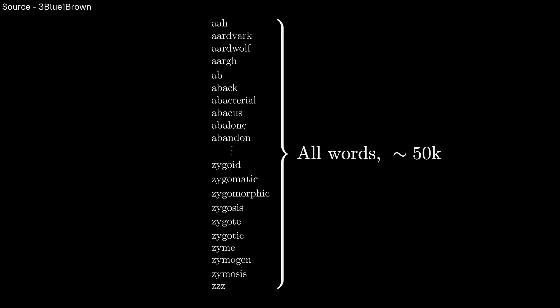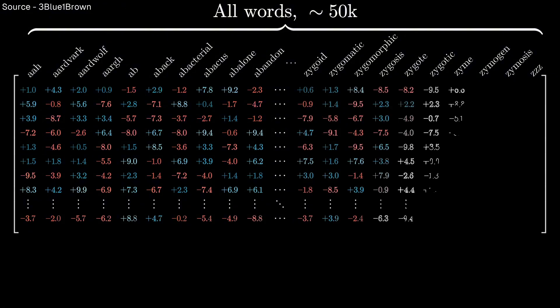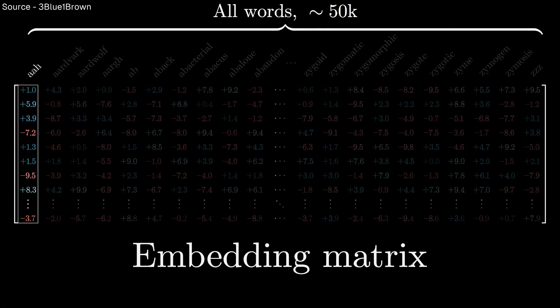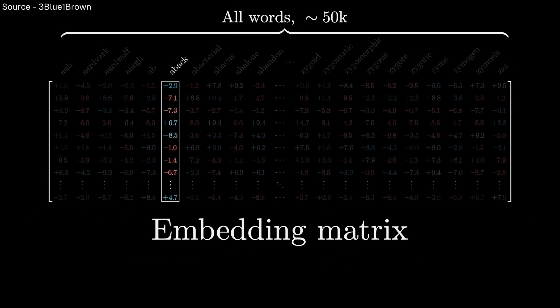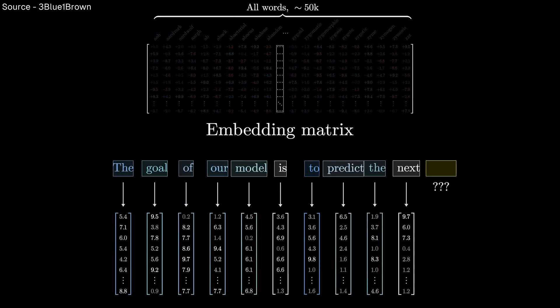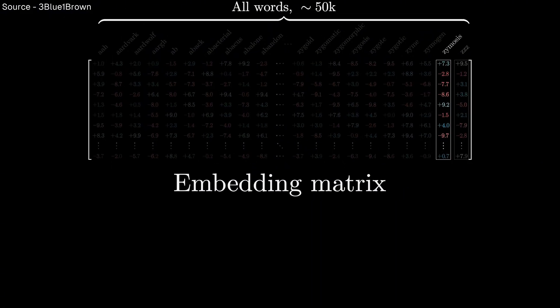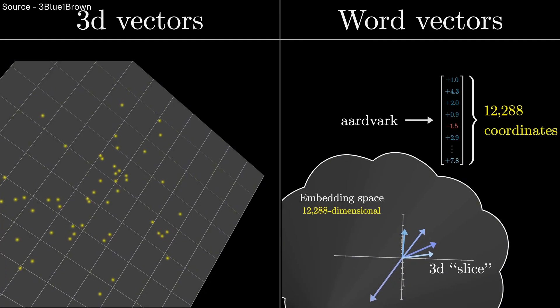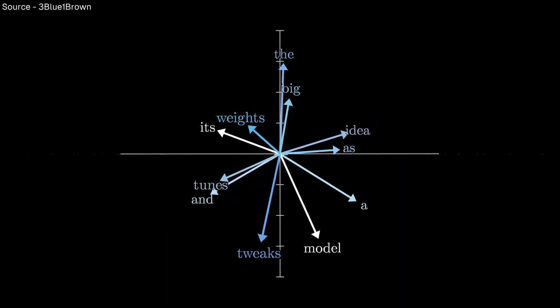When you train a neural network on language, it first learns simple patterns: the frequency of letters, common word combinations, basic grammar. But as you scale up the model and expose it to more data, something remarkable happens. The network starts to pick up on increasingly sophisticated patterns, narrative structure, logical reasoning, even abstract concepts.